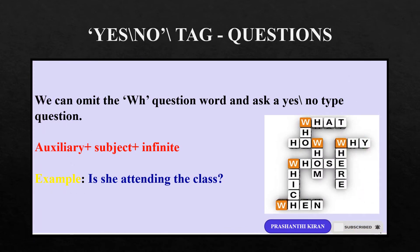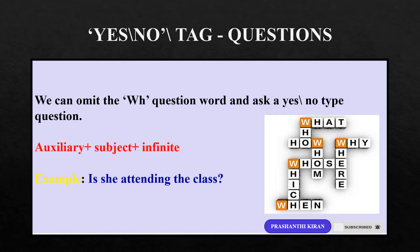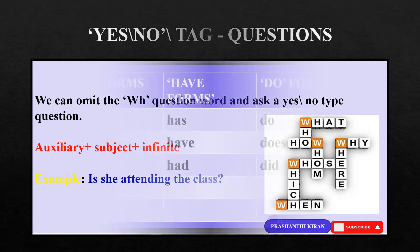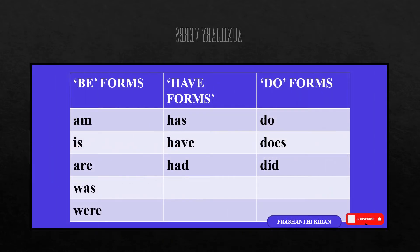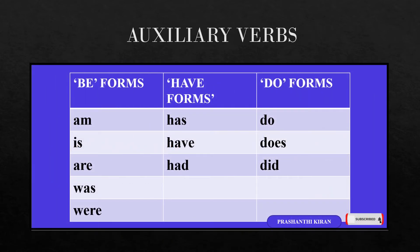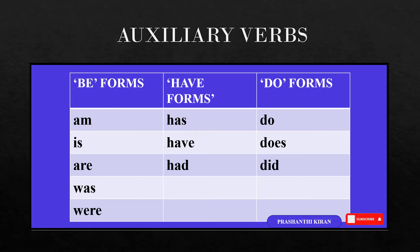Let us see the auxiliary words used as question words. We can omit the WH question word and ask a yes or no type question with the help of auxiliary verbs. For example: Is she attending the class? In this slide, you can see some of the auxiliary verbs used as question words.